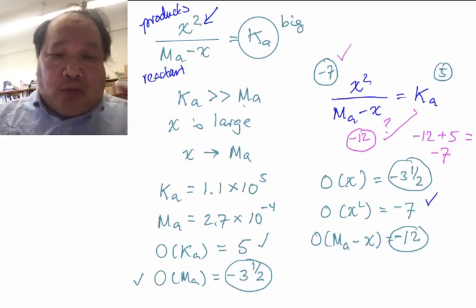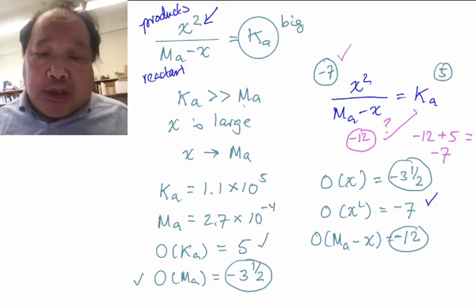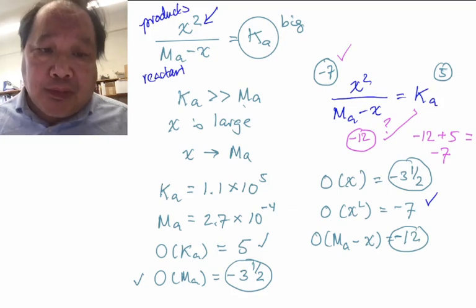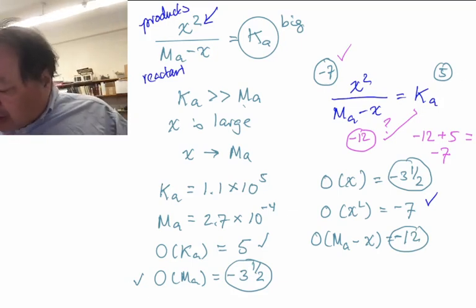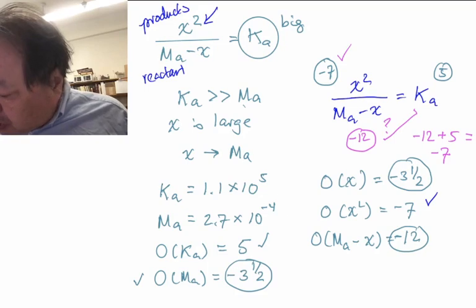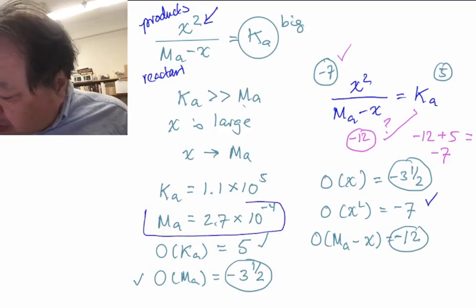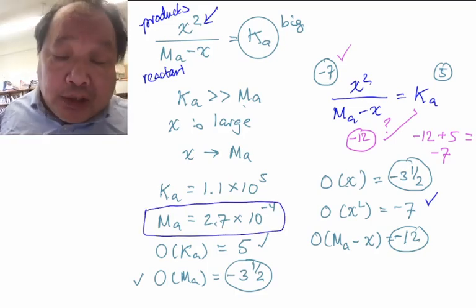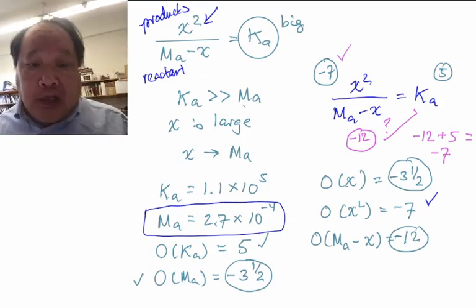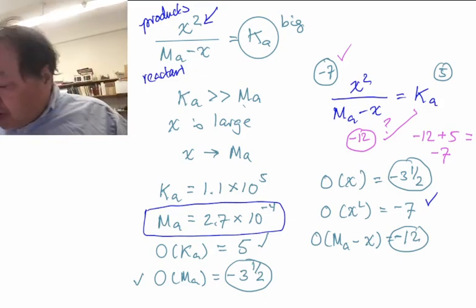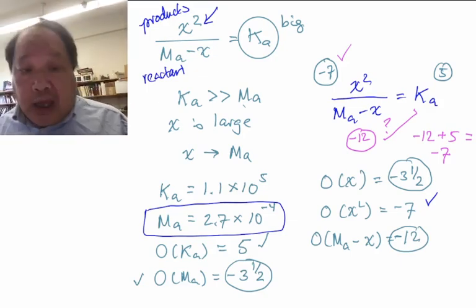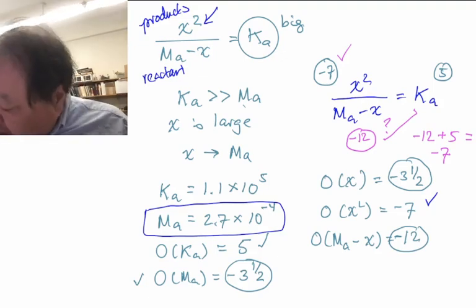To like one part in a billion they are the same number. The important thing is that Ma is only known to two sig figs, so if they're close to one billionth of each other and you only know Ma to two sig figs, it has to be that X to two sig figs is Ma.